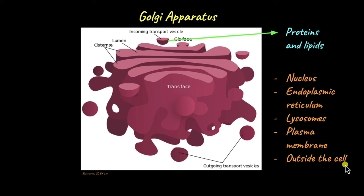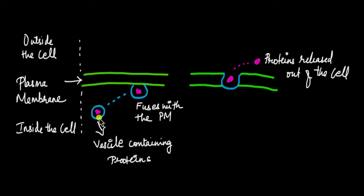How are these proteins and lipids secreted out of the cell? This is a vesicle that contains proteins or lipids that has formed from the Golgi apparatus. It knows the address where it needs to go, and the address is out of the cell. What happens is this vesicle comes and fuses with the plasma membrane that covers the entire cell. As this vesicle fuses with the plasma membrane, the proteins or lipids are released out of the cell.